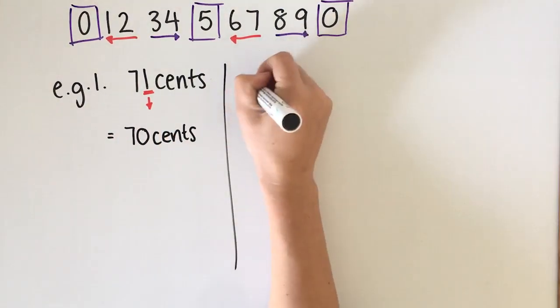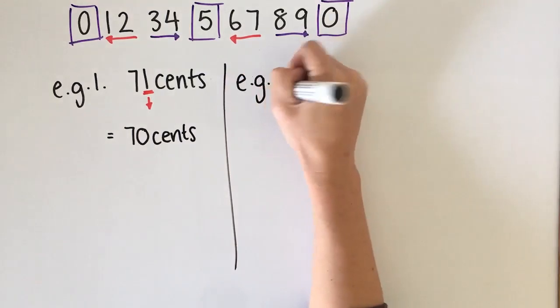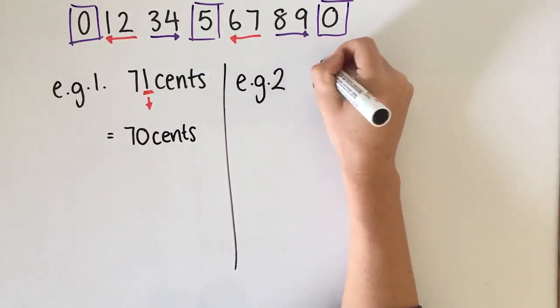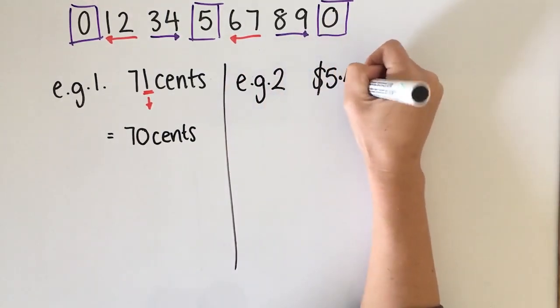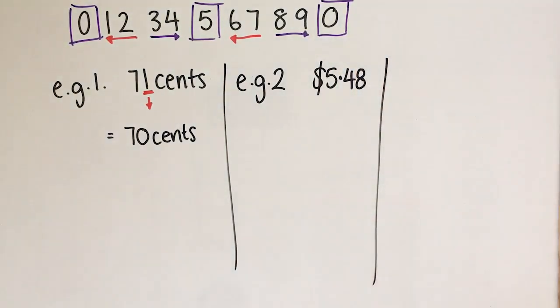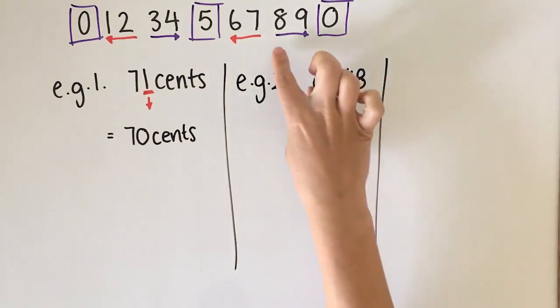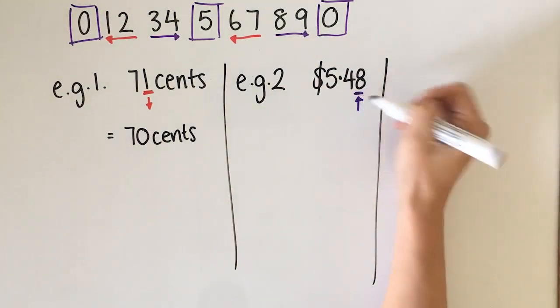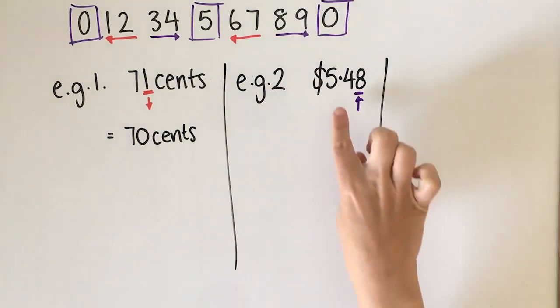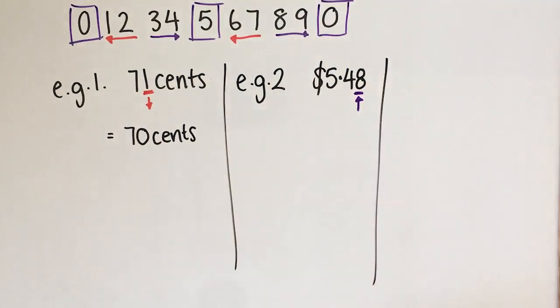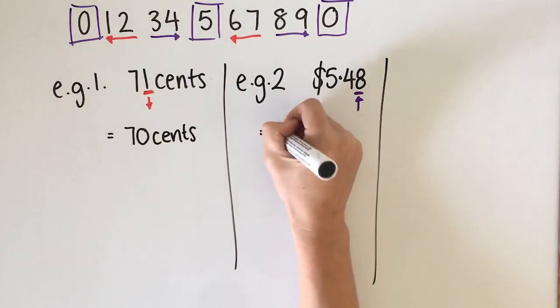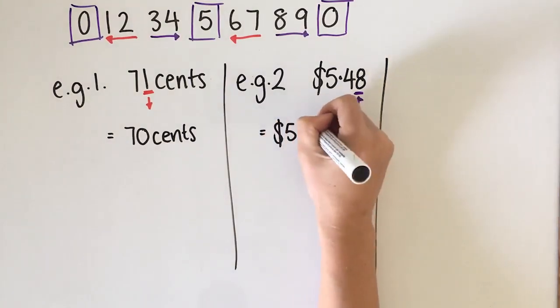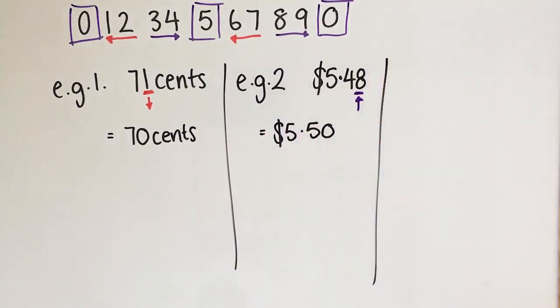Our second example is going to be five dollars and 48 cents. For this one we're going to look at eight because that's our furthest digit. Eight tells us that we need to round up. So that means that 48 cents becomes 50 cents. So then our answer would be five dollars and fifty cents.